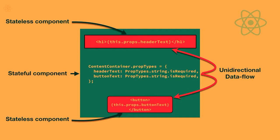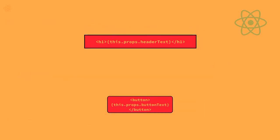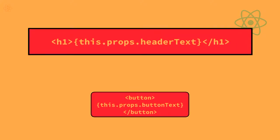A stateless component is a piece of JavaScript that receives some data and just displays it — it's purely presentational. With a stateful component, it knows a bit more about itself: it might know whether a modal is open, or it might manage its own data. Within these components, we're just rendering HTML. When this came out, it was horrifying to a lot of people — HTML rendered in JavaScript. But when you refer to these within your components, you use an XML-like syntax called JSX.